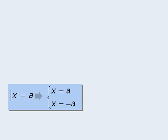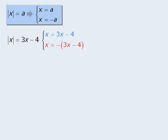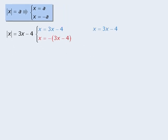Now let's use this property to solve the following equation. If the absolute value of x equals 3x minus 4, then we can apply our rule to see that x equals 3x minus 4, or x equals negative 3x minus 4. At this point, we have two equations to solve.